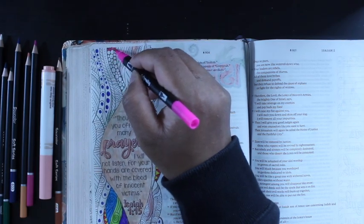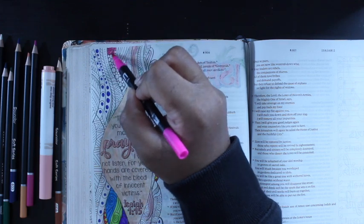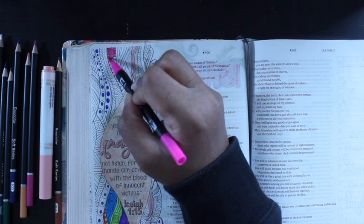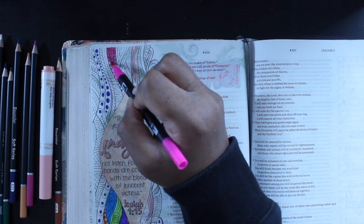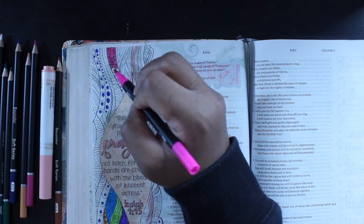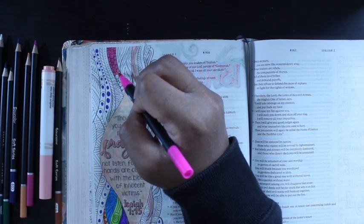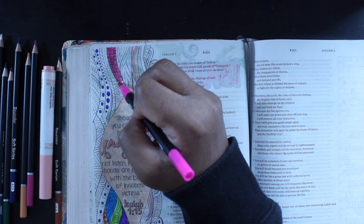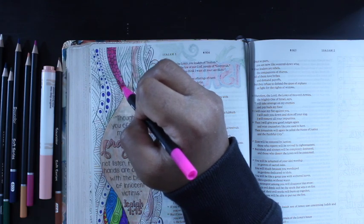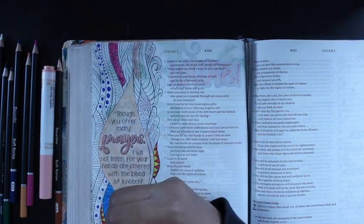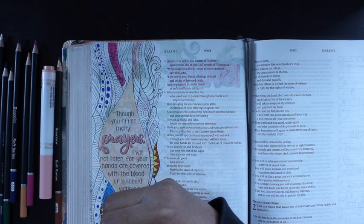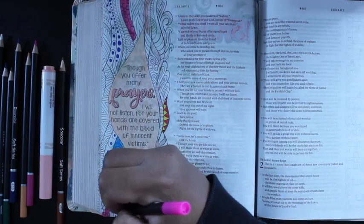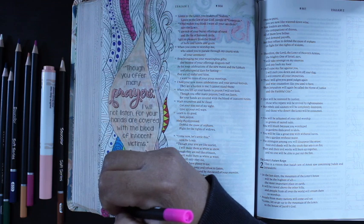A Warning of Judgment. Come, descendants of Jacob, let us walk in the light of the Lord. For the Lord has rejected his people, the descendants of Jacob, because they have filled their land with practices from the east, and with sorcerers as the Philistines do. They have made alliances with pagans.